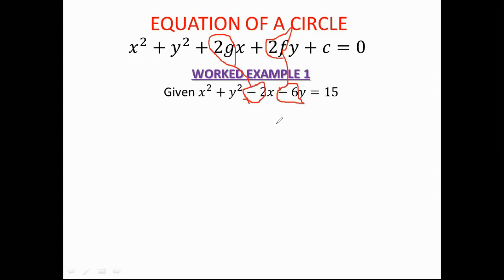Write your center as negative g to negative f. Substitute g equals negative 1 — there is already a negative sign in the formula, so it becomes a double negative, giving positive 1. Then substitute f equals negative 3 into the formula; the double negative gives positive 3. So the center becomes (1, 3).